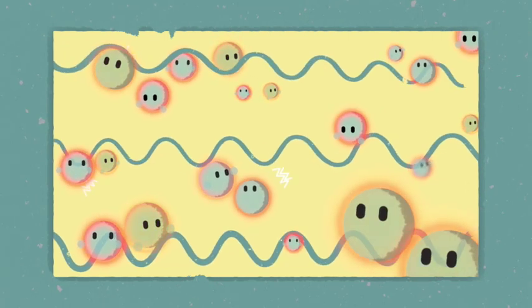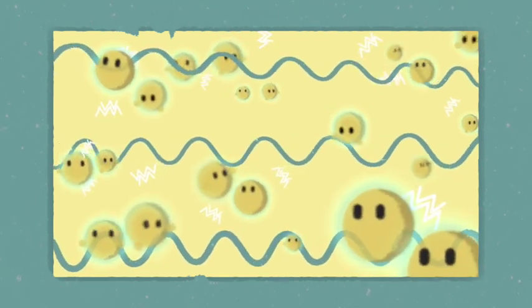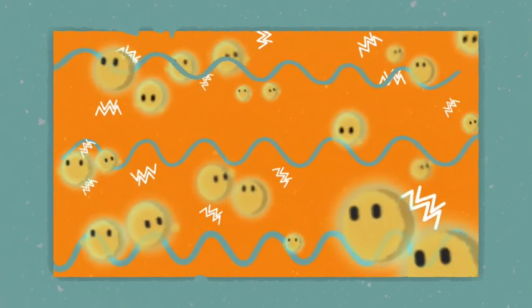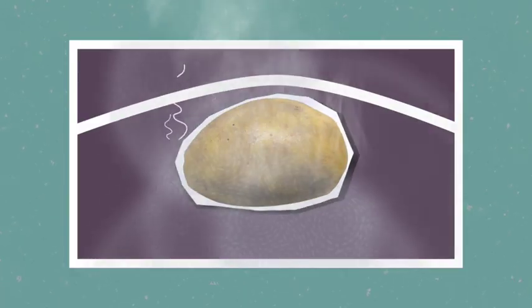they're absorbed by the water molecules within whatever delicious dish you're cooking. This causes the water molecules in the food to vibrate. This movement creates friction, which results in the heat energy that cooks the food.